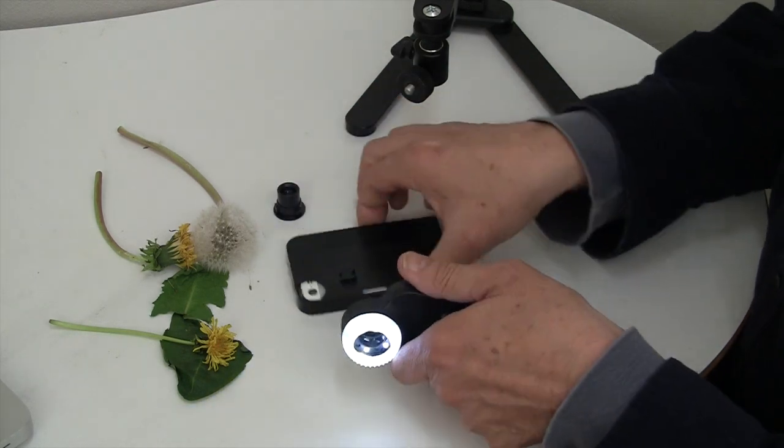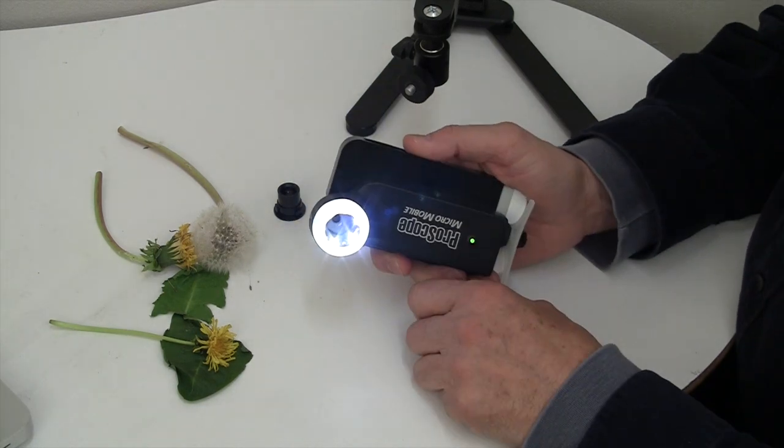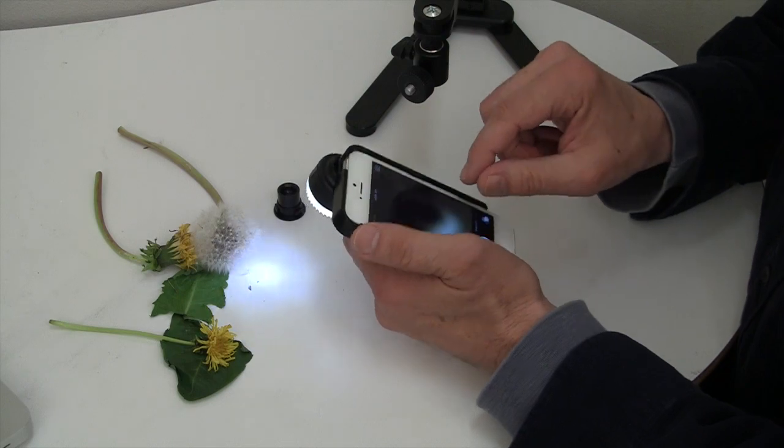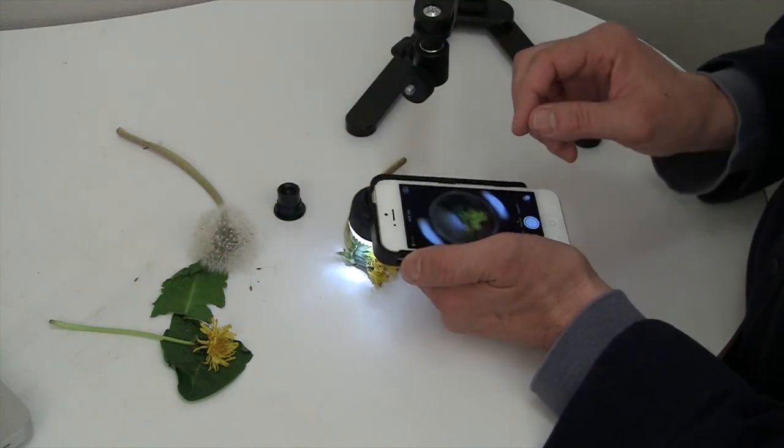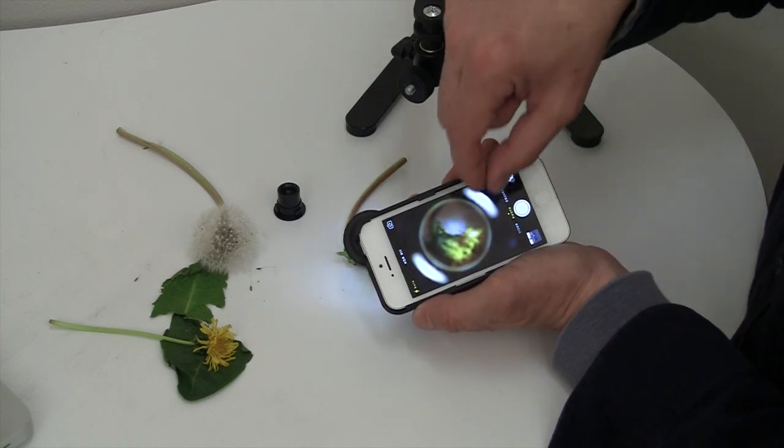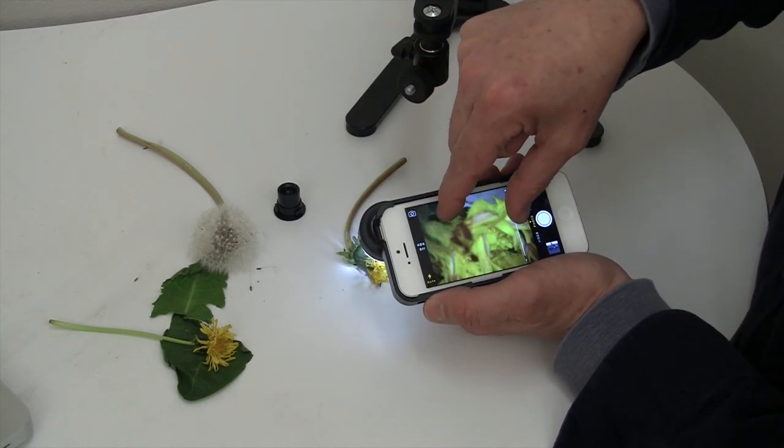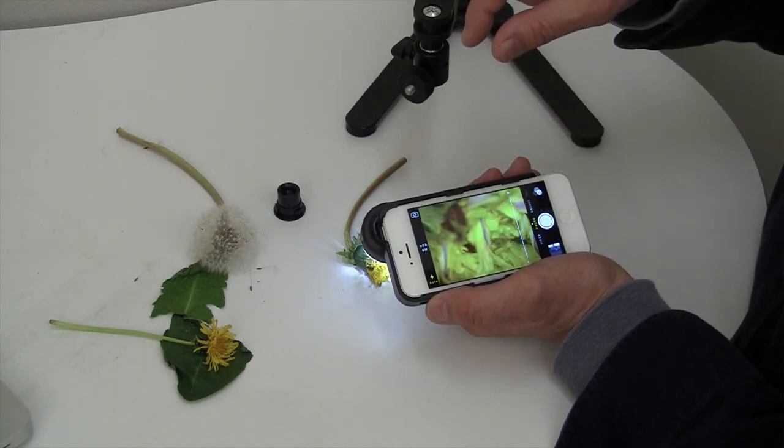Now, at this point, I'd be using the white LEDs with the Apple camera. And then, all I have to do is, if I wanted to look at that dandelion at a distance, just like that.